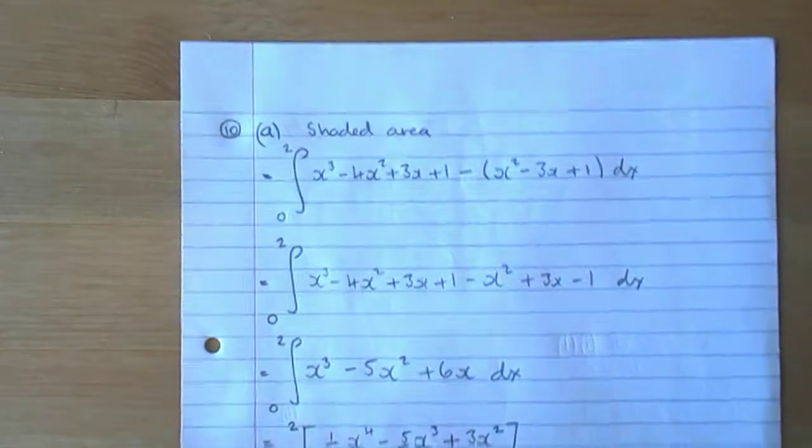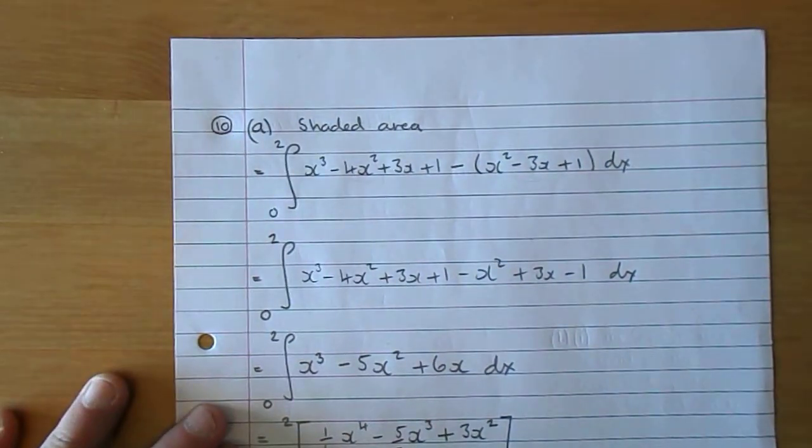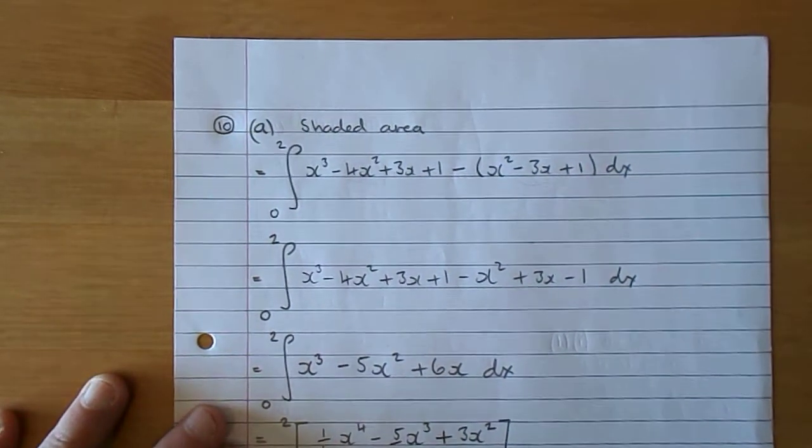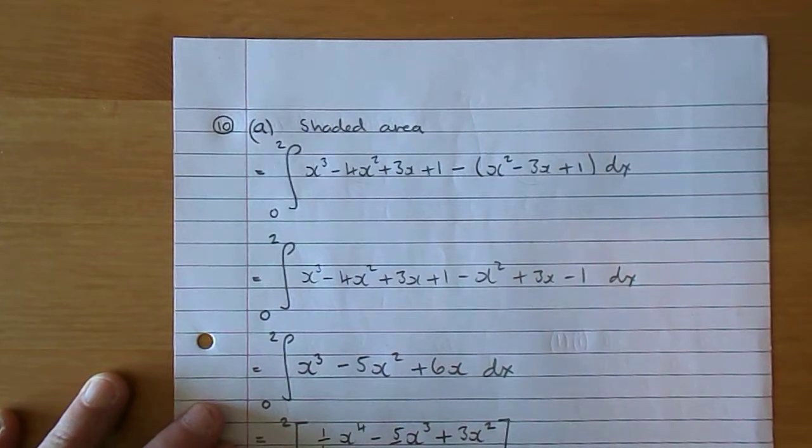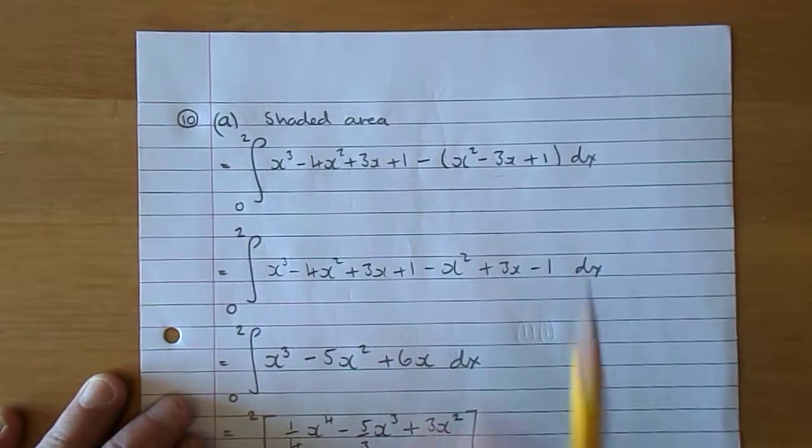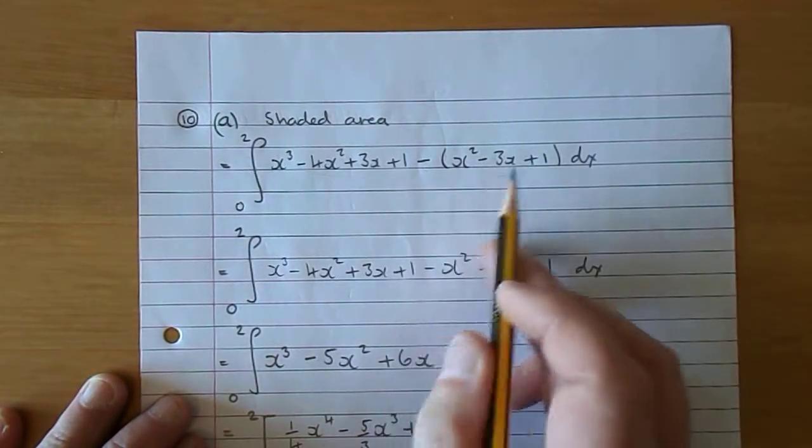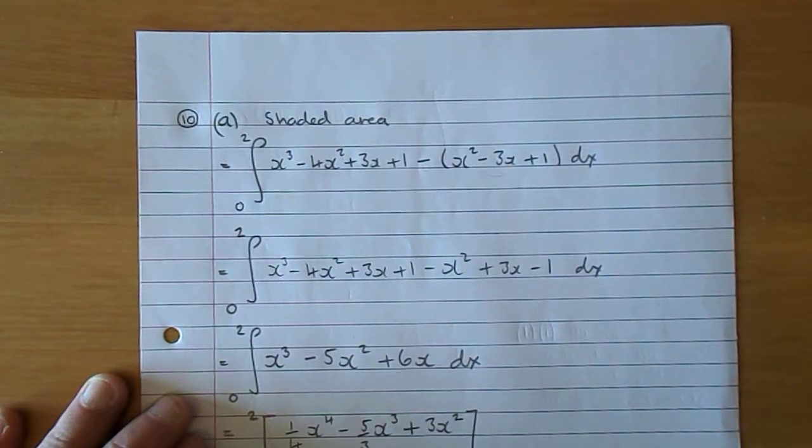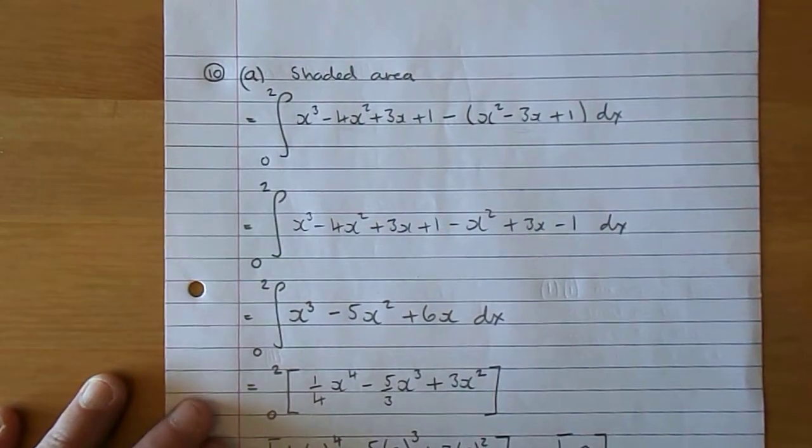So here we have it: the integral between 2 and 0 of the top curve, x cubed takes 4x squared plus 3x plus 1, take away the bottom curve. Notice the second curve has to be in a bracket because you're taking away an actual function.